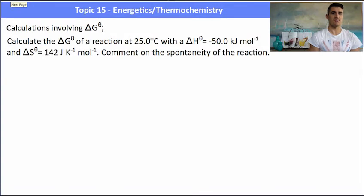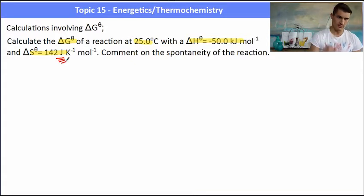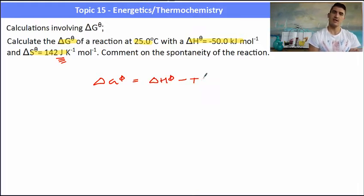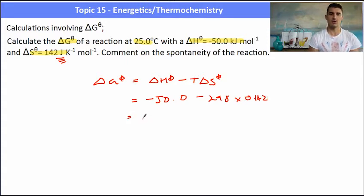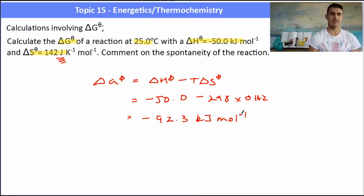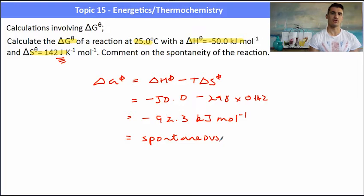Here's a calculation involving delta G. Calculate the Gibbs free energy of a reaction at 25°C with an enthalpy of −50 kJ/mol and an entropy of 142 J/K/mol, and comment on spontaneity. Using ΔG = ΔH − TΔS: ΔG = −50 kJ/mol − 298 × 0.142 kJ/K/mol = −92.3 kJ/mol. The negative value for delta G means this reaction is spontaneous.